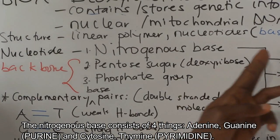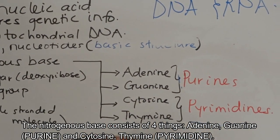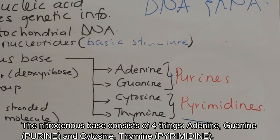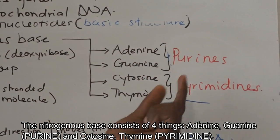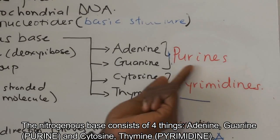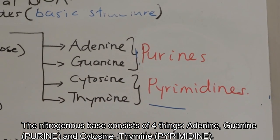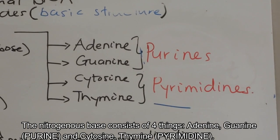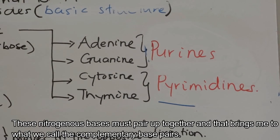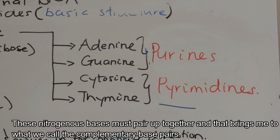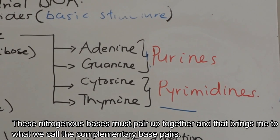The nitrogenous base consists of four types: we have adenine, guanine, cytosine, and thymine. Adenine and guanine together we call purines, while cytosine and thymine together we call pyrimidines. These nitrogenous bases must pair up together, and that brings us to what we call complementary base pairs.